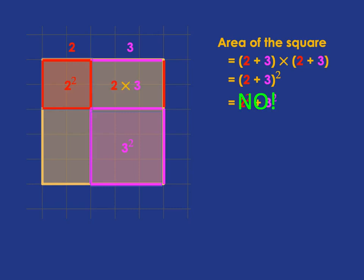In fact, they're missing this little piece here, which is 2 times 3, that rectangle, and the area of this little piece here, which is 3 times 2. So, very clearly, 2 squared plus 3 squared is not the same as 2 plus 3 all squared.